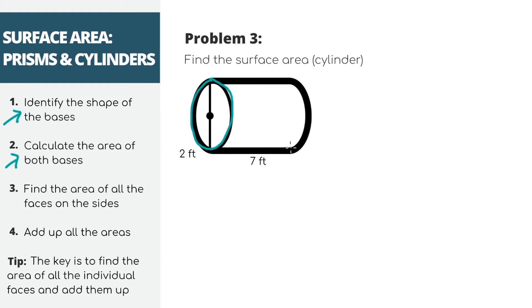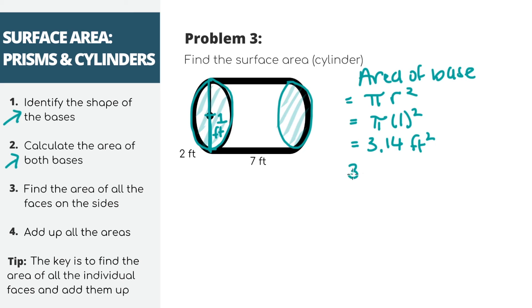To find the area of the base, the formula for the area of a circle is pi r squared. From the diagram, we're getting that the diameter is 2 feet, so we know the radius is 1 foot, because the radius is just 1 half of the diameter. Plugging into the formula, we'll get about 3.14 feet squared for the area of one base. Let's double it to find the area of both bases, and we'll get 6.28 feet squared.